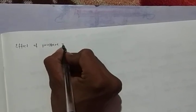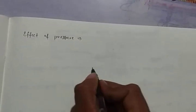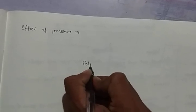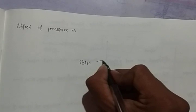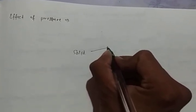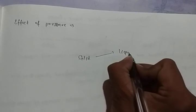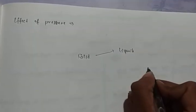Now we consider the effect of pressure. To understand the effect of pressure, let us take the example of ice. Ice is in the form of a solid. When pressure or temperature is applied, it changes into liquid, and then into gas.